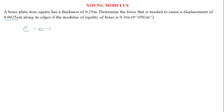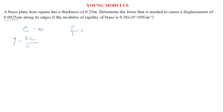The extension is given as 0.0025. We've been given the modulus of rigidity, which relates to the Young's modulus — it talks about the strength of the material. To find the force, we infer from the Young's modulus formula: E equals FL over area times extension. Making F the subject of the formula, we get force equals Young's modulus times area times extension over the original length.